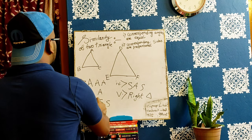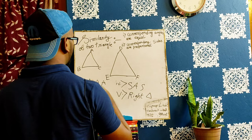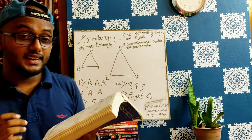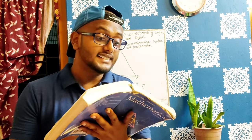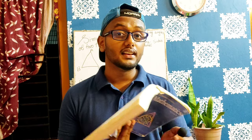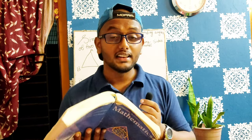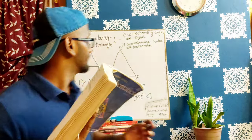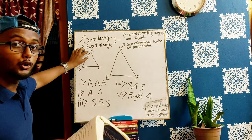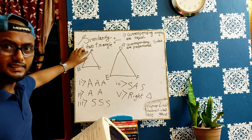Let's say triangle ABC and triangle DEF. The statement says: if in two triangles the corresponding angles are equal, then their corresponding sides are proportional. Hence the triangle is similar. If in two triangles the corresponding angles are equal, then their corresponding sides are proportional, hence the triangle is similar.